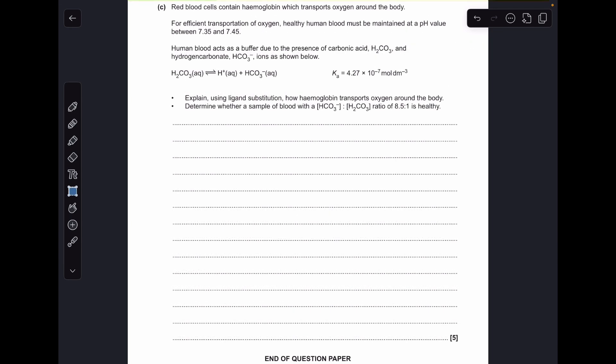And finally part C: starting with the first bullet point, we've got to explain using ligand substitution how haemoglobin transports oxygen around the body.